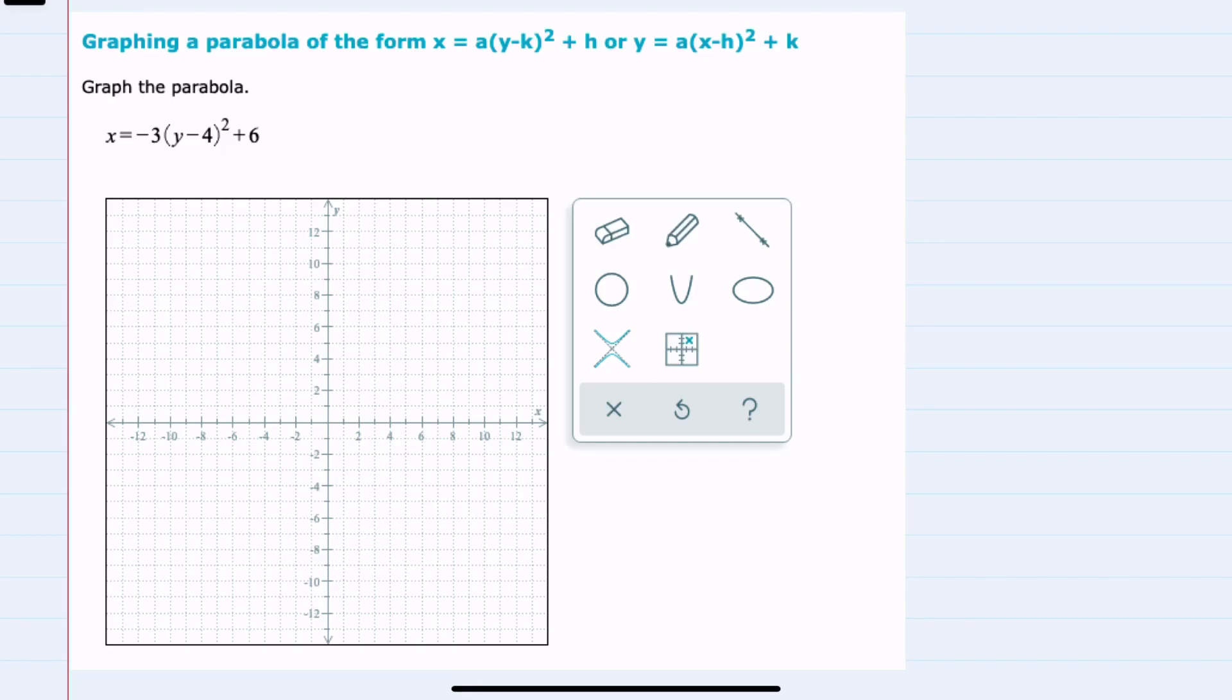In this video, I'll be helping you with the Alex problem type called graphing a parabola of the form x equals a times y minus k squared plus h, or y equals a times x minus h squared plus k.